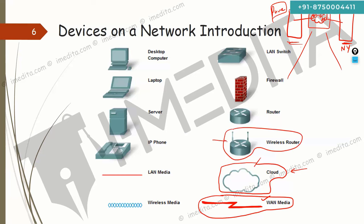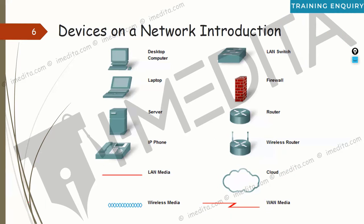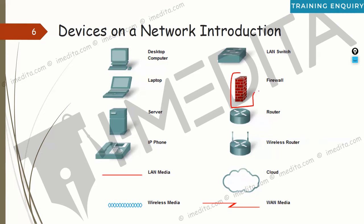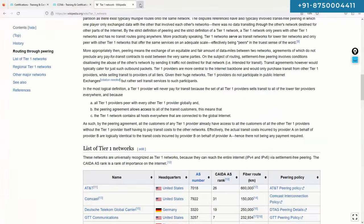Wireless routers are Wi-Fi devices — smaller versions for home use, with different enterprise-grade devices for larger networks. We'll spend significant time on wireless later in the training. Lastly, there is the firewall — a security appliance. Just like you buy a switch or router, you buy a hardware firewall box. A firewall is deployed at the edge of the network to decide who is allowed in and what they are allowed to do.